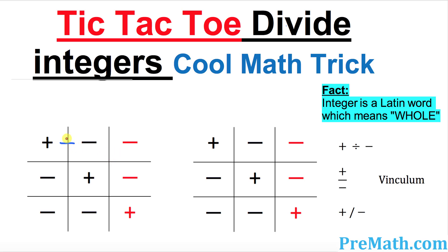Let's go ahead and divide. Positive divided by negative would always result in negative. Negative divided by positive is going to give us negative. And finally, negative divided by negative would result in positive.